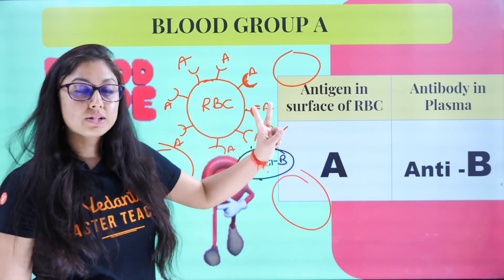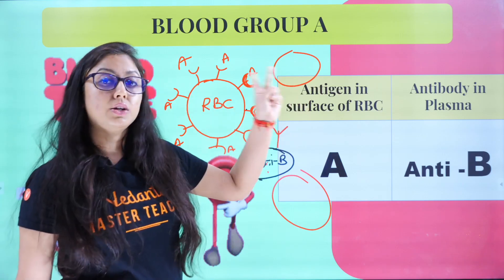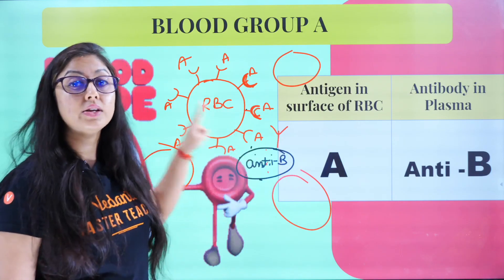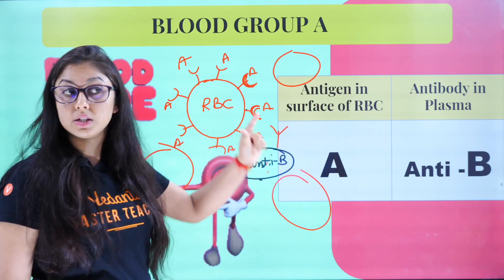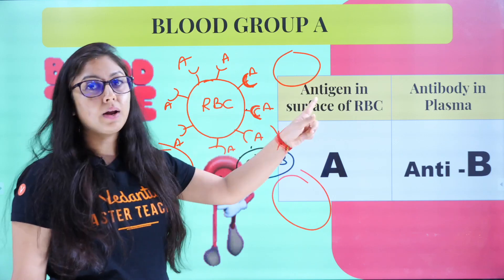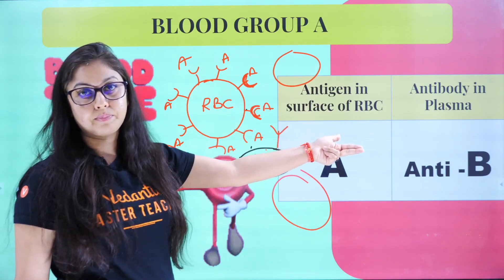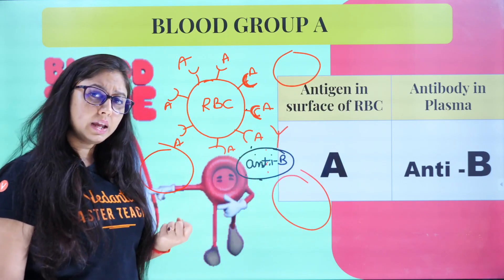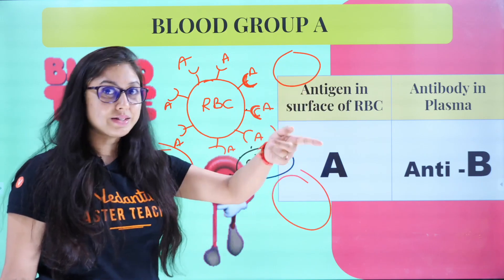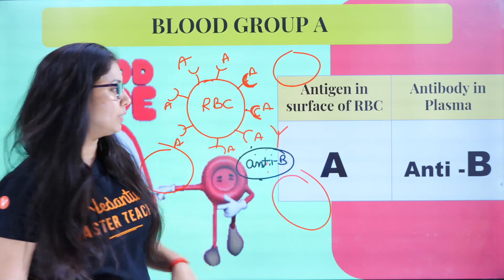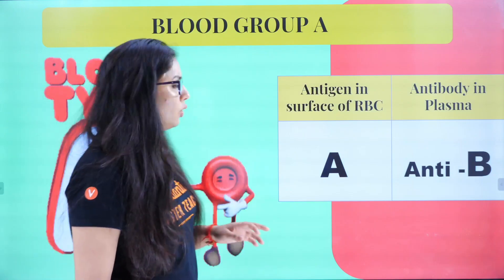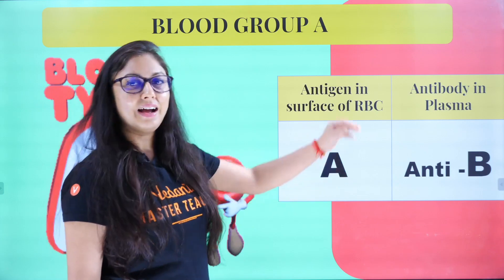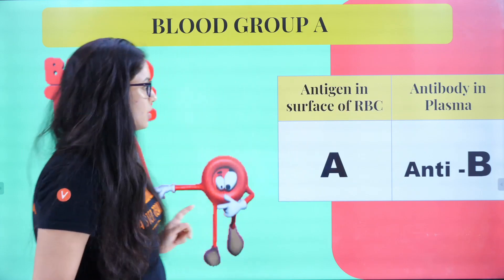So two key points: what determines your blood group? The antigen. Where is the antigen present? On the surface of your RBC — not WBC, not platelet, not plasma. The antibody is in the plasma, and it is always the opposite: if antigen A is present, antibody B will be in the plasma.